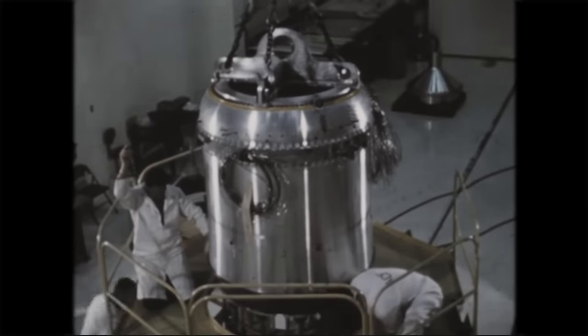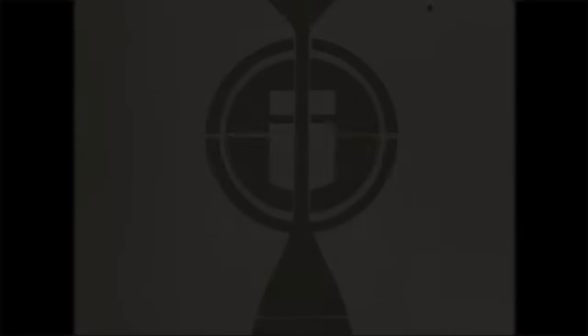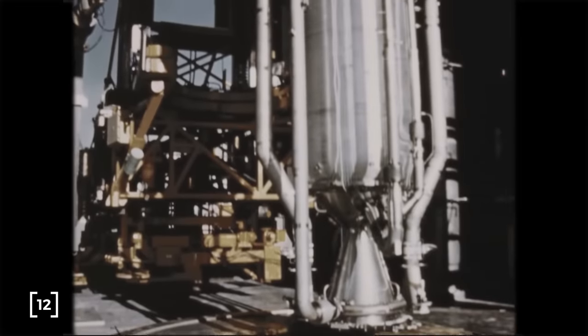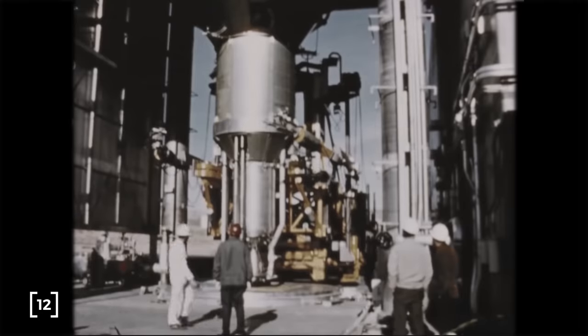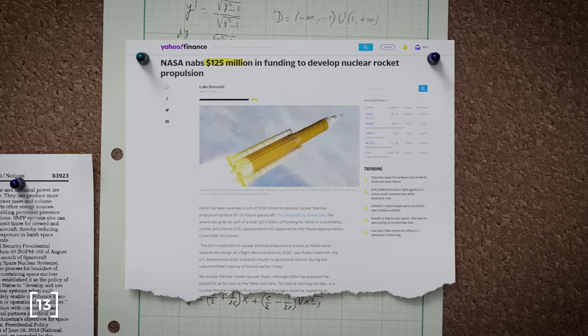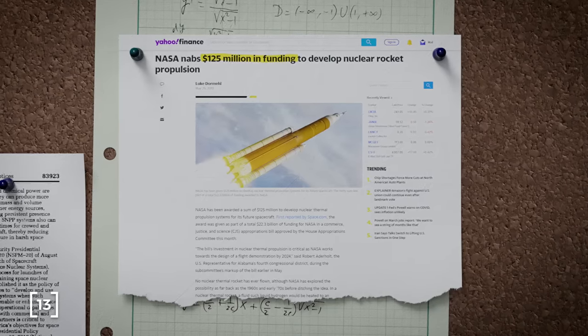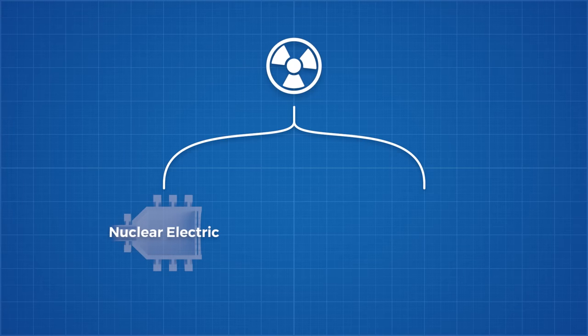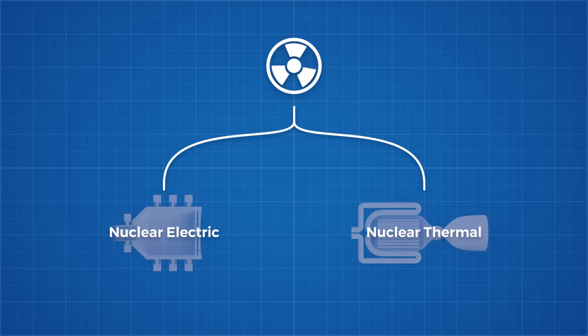Nuclear power is the only thing that can give the power density needed to make this viable. This isn't a new concept. In 1961, the Atomic Energy Commission and NASA launched the Nuclear Engine for Rocket Vehicle Applications Programme. Or NERVA for short. This program developed and ground tested 20 reactors before it was disbanded in 1973 due to budget constraints. It was recently revitalised when the US Congress approved $125 million in research funding for nuclear propulsion. There are two primary types of nuclear space propulsion. Nuclear electric, which would power an ion drive like we saw above, and nuclear thermal, which was the focus of the NERVA program. So let's start there.